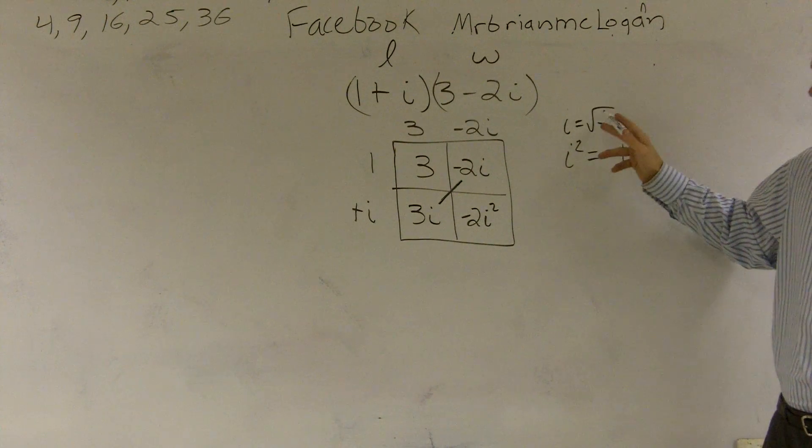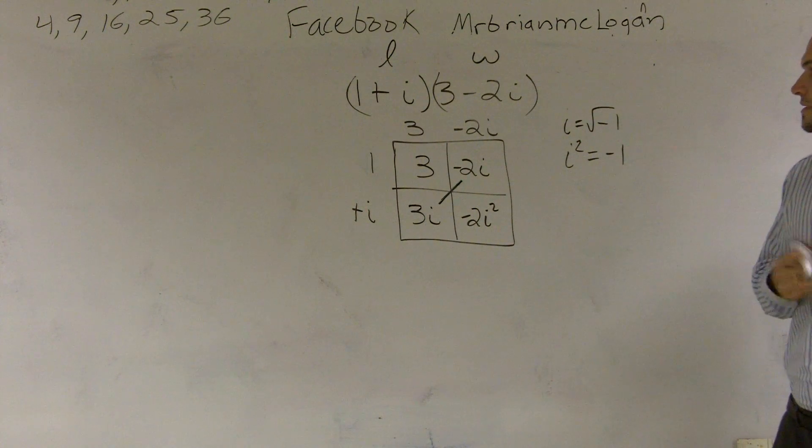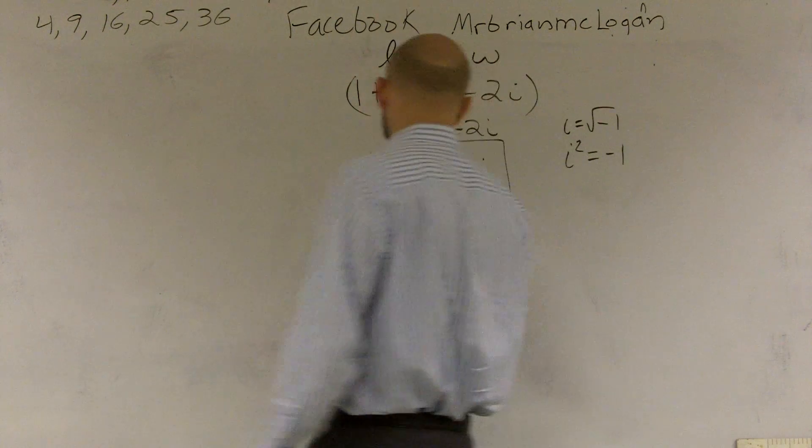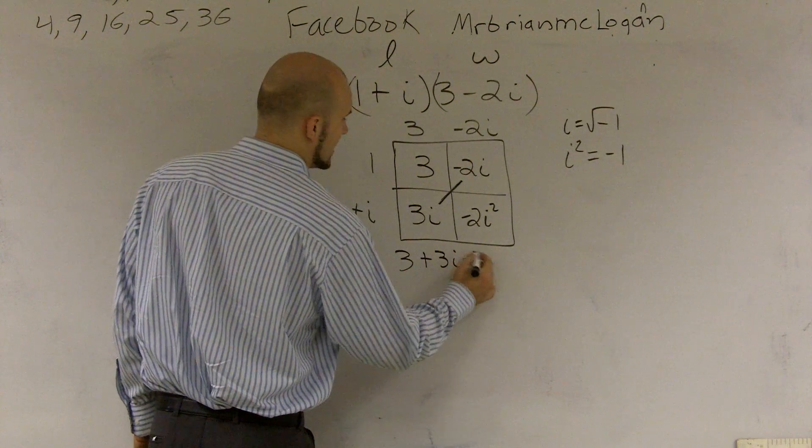Because what I'll do is I'll square both sides and the square and the square root cancel out. So i squared equals negative 1. So therefore, this is really a positive 2. So when I write out my answer, let's actually just write it all the way out.